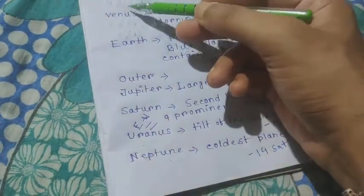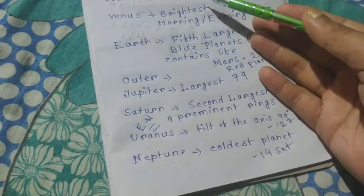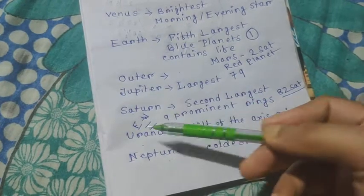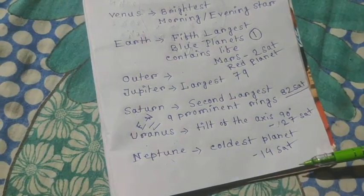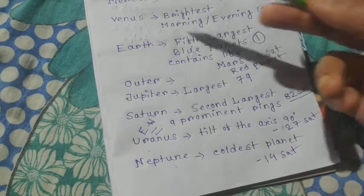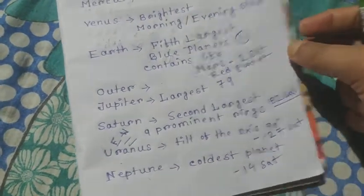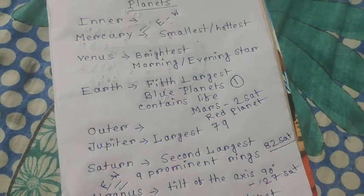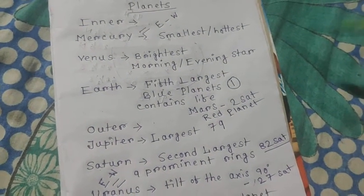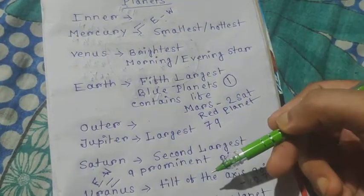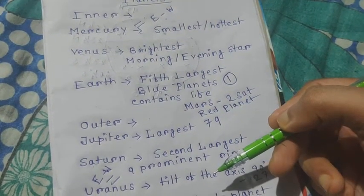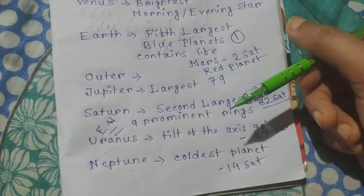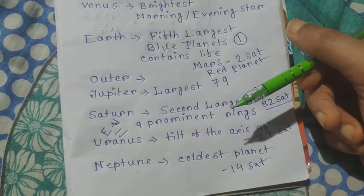So Mercury, Venus, Earth, and Mars are within the inner planet system, and the outer or Jovian planet system consists of Jupiter, Saturn, Uranus, and Neptune. The first four — the inner planets — are all made of solid components, and the rest of the planets, the outer ones, are made of gaseous content or matter. In the next chapter, we will discuss about our planet Earth.